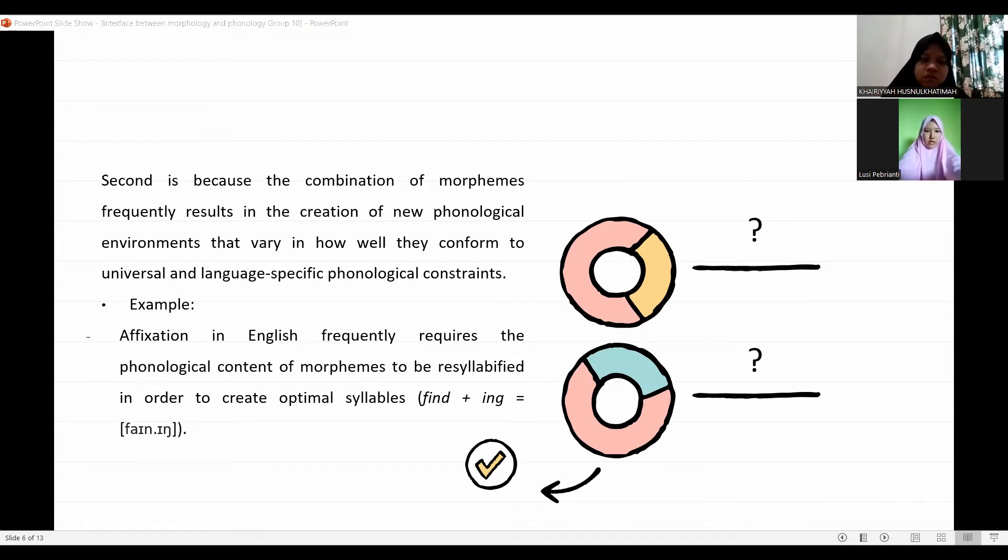Second is because the combination of morphemes frequently results in the creation of new phonological environments that vary in how well they conform to universal and language-specific phonological constraints. In many cases, the phonological environment created by combining morphemes must be overtly modified by the phonology in order to satisfy a language's phonological constraints.